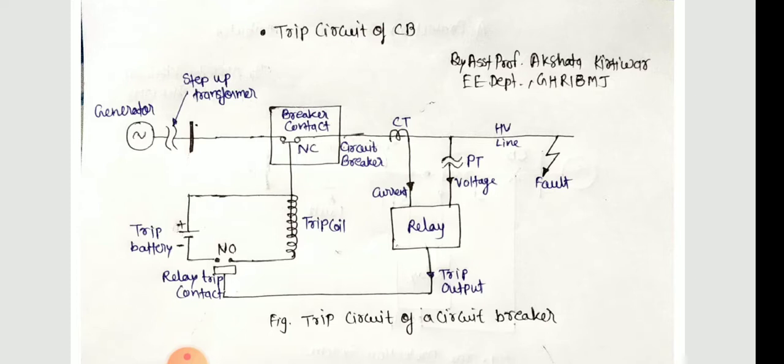The relay output contact is wired in series with the trip battery as you can see in the figure, as well as with the trip coil. Thus, when the relay operates, the trip coil gets energized and the circuit breaker quickly parts its contact.